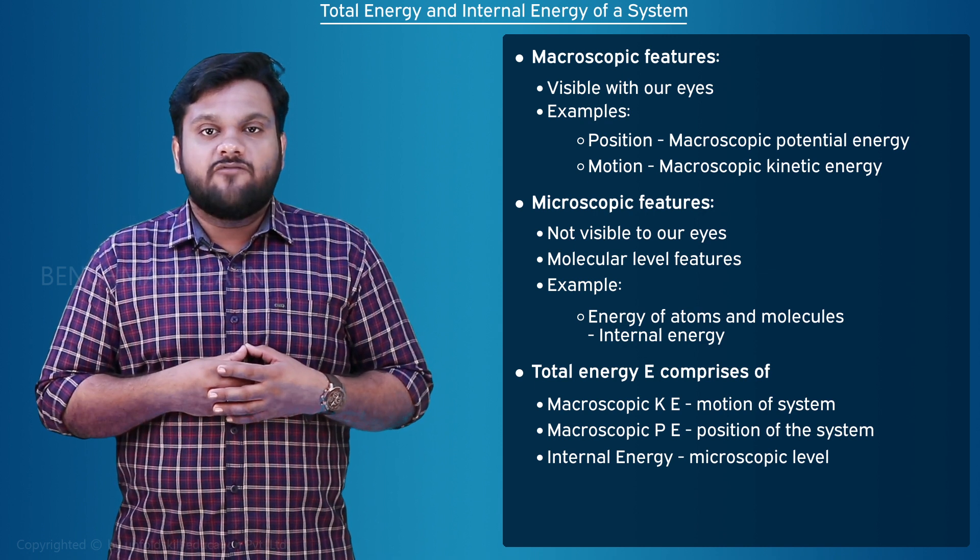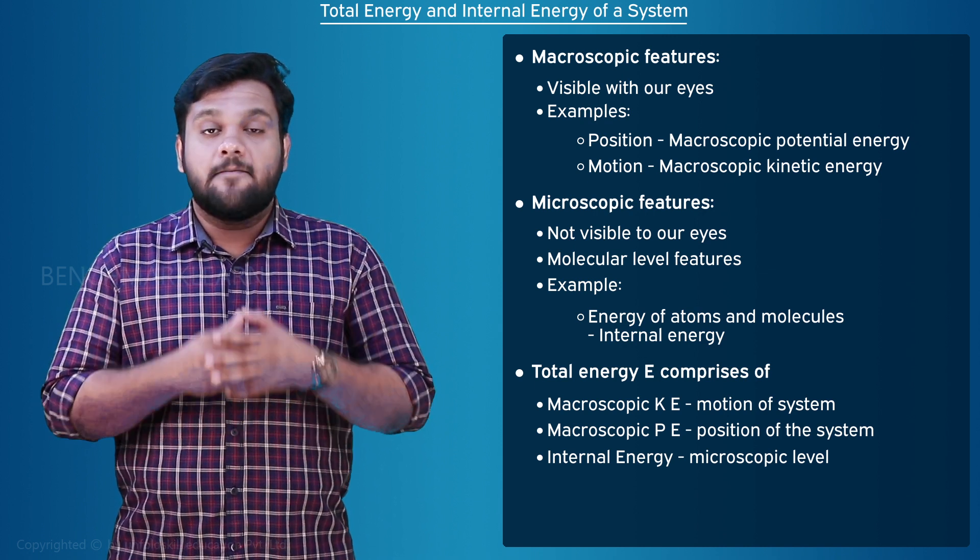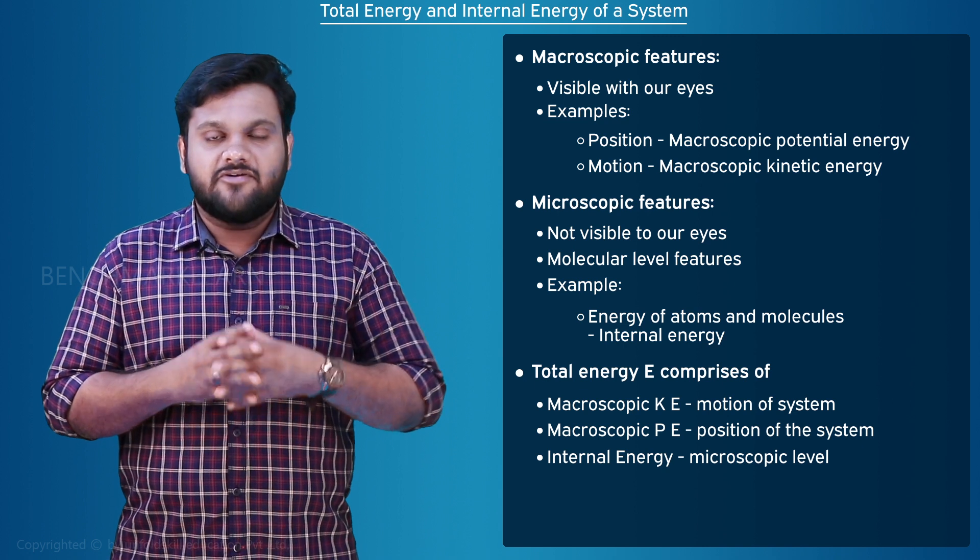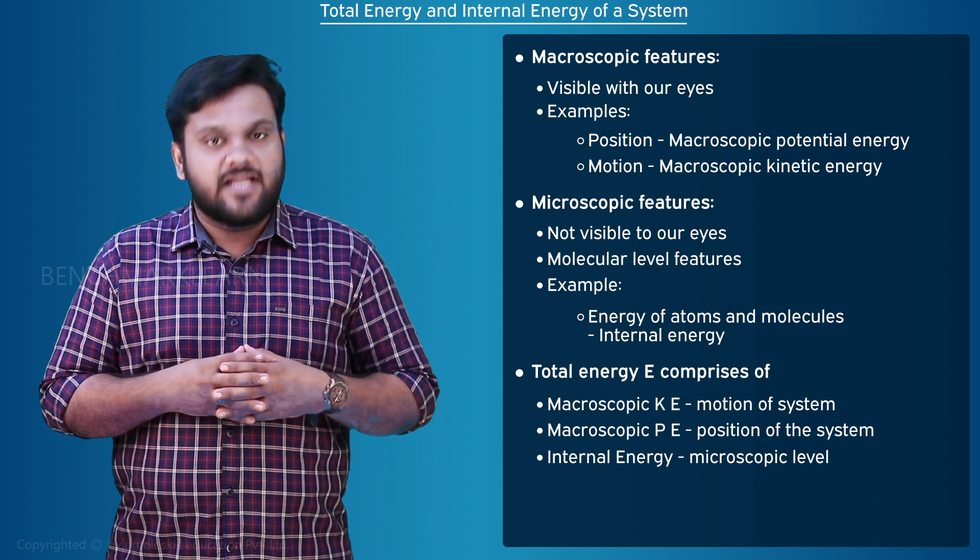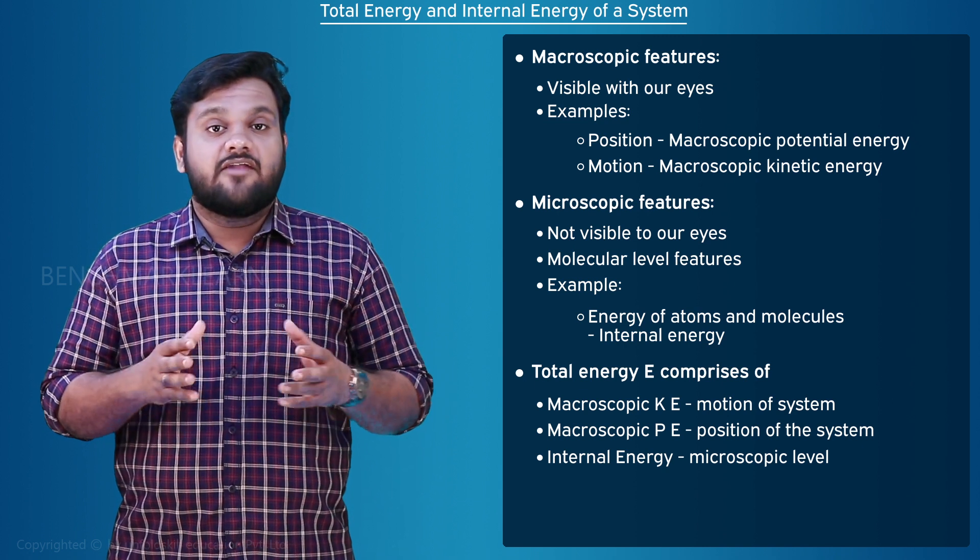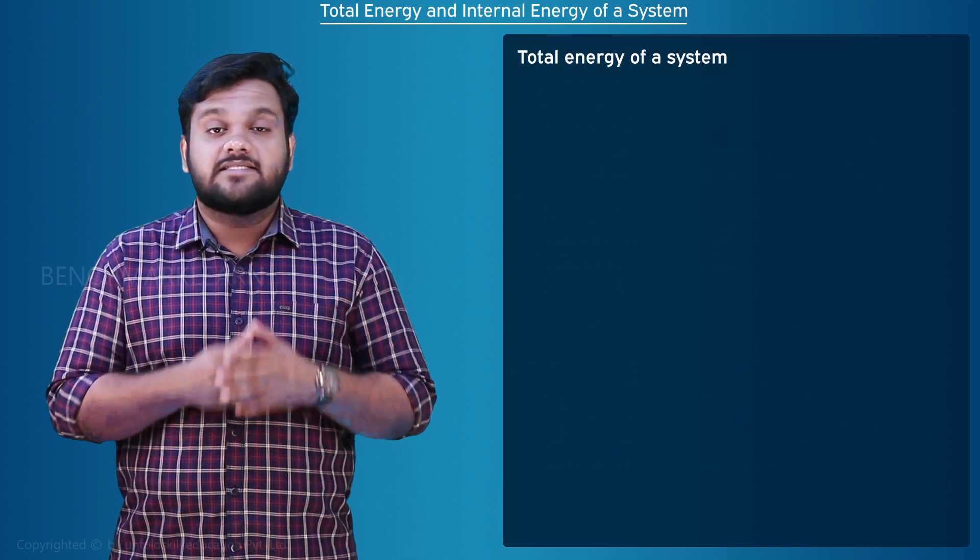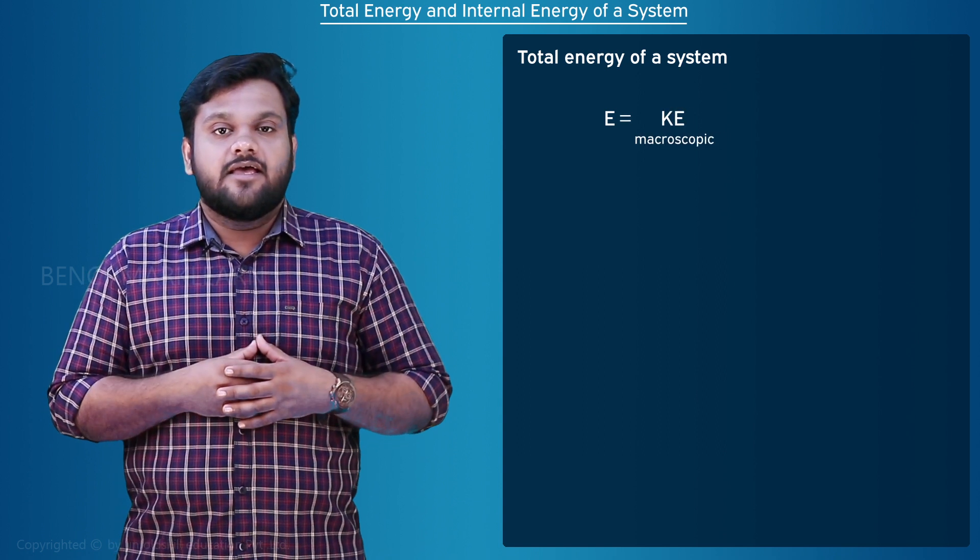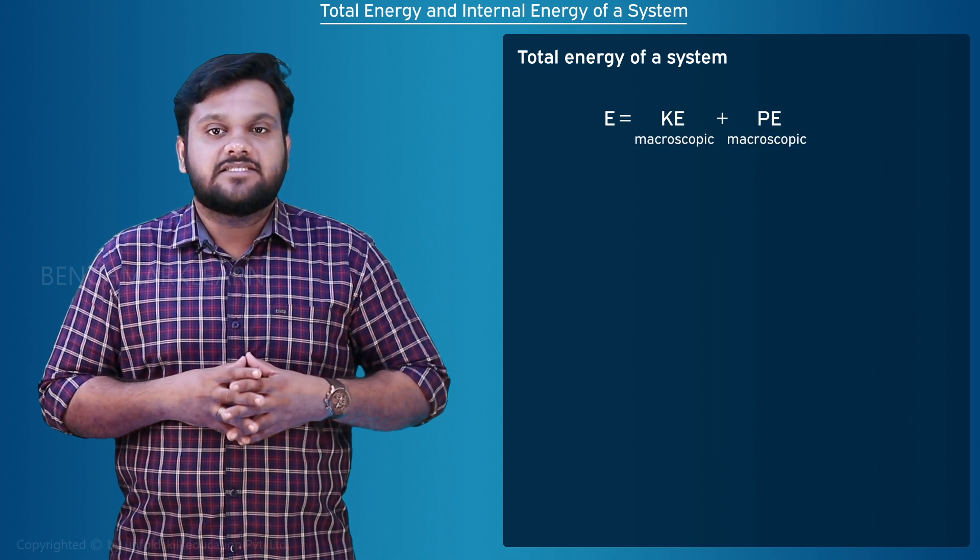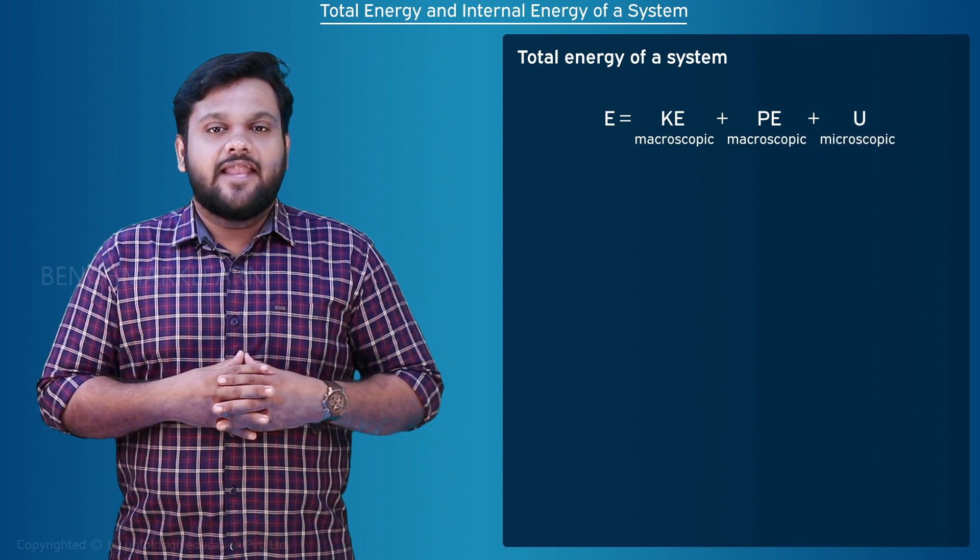If other microscopic forms of energy such as magnetic energy, electrical energy, surface tension energy are absent, we can write the expression for total energy of a system as capital E is equal to kinetic energy plus potential energy plus internal energy.